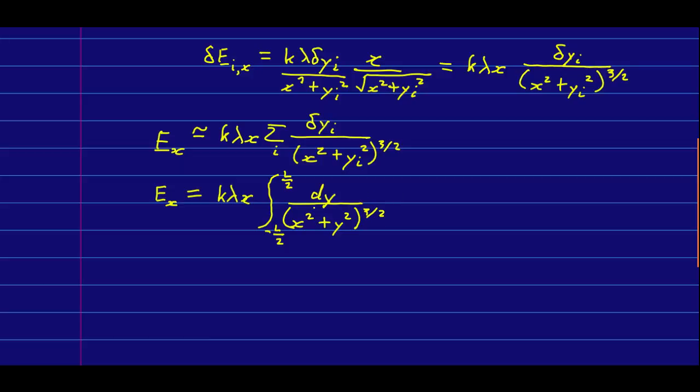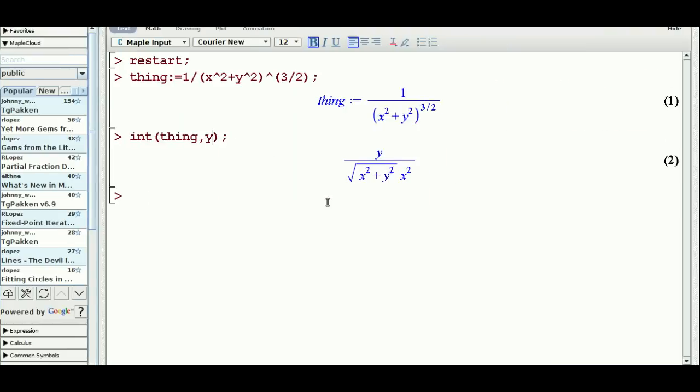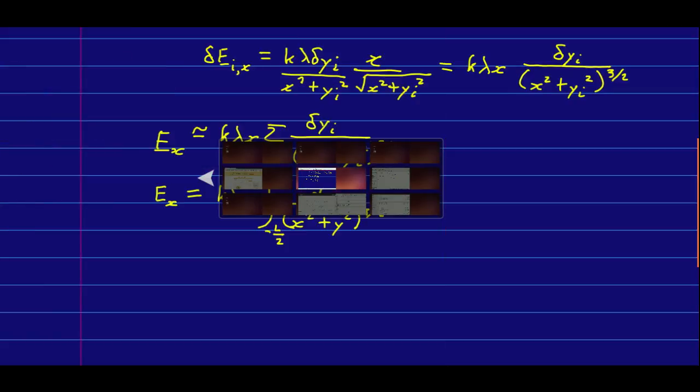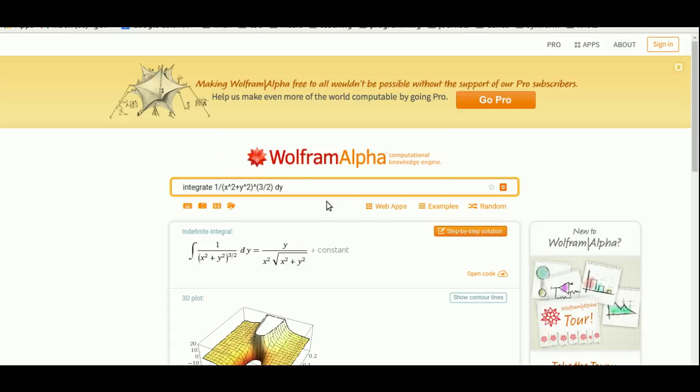So, you could look it up on a table of integrals, but these days that's the old-fashioned way. The way you're more likely to do it when you come across an integral you don't know how to do is perhaps plug it into Maple, like this. Or, it might be useful to know about this website called Wolfram Alpha, which will do integrals for you.